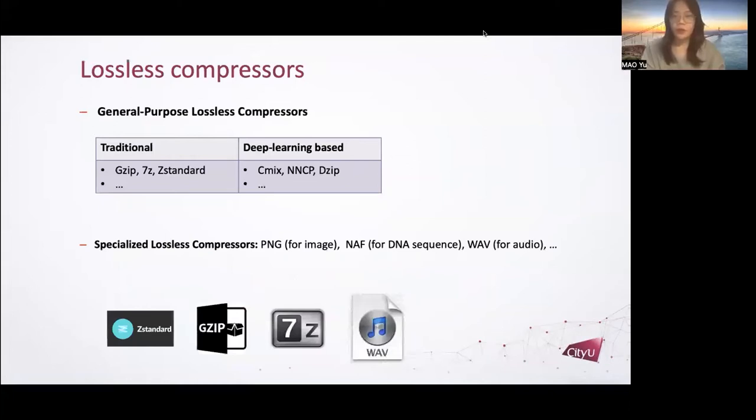Our research focuses on lossless compressors, which means the original compressor data can be fully recovered without information loss. Lossless compressor has two types: general purpose compressor and specialized compressors. General purpose compressor can deal with any type of data. Common examples are Gzip and 7-Zip.